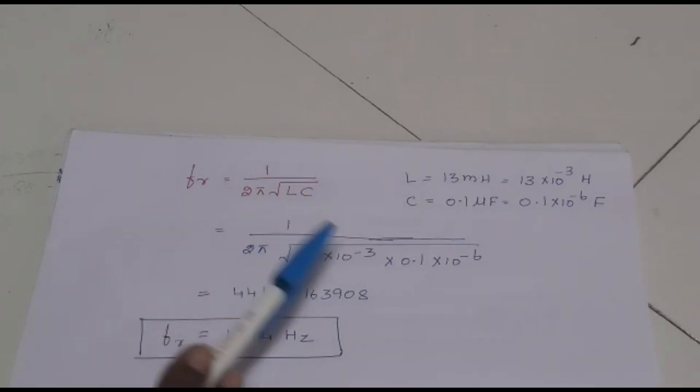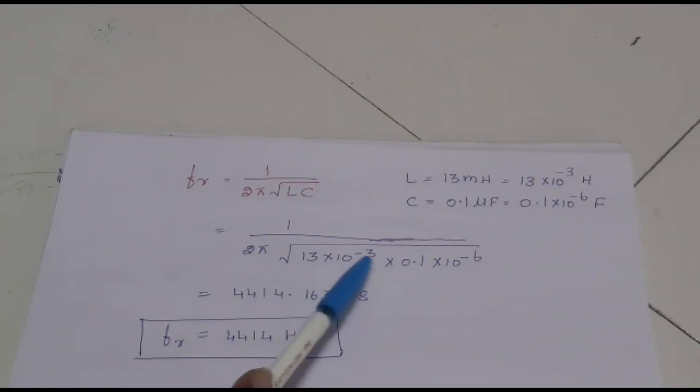I substituted all the values in this formula. Now, I will show you how to operate the calculator to do this calculation. Observe here, we have the powers 10 power minus 3, 10 power minus 6. Everything we can include in the calculation by using the scientific calculator. Let me show you how to do this.